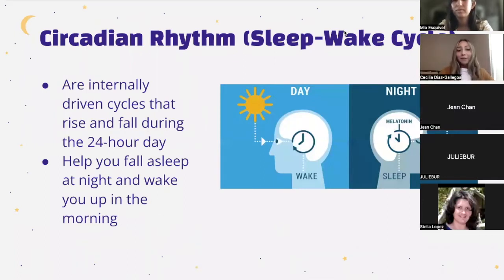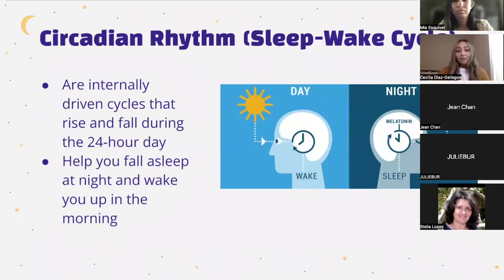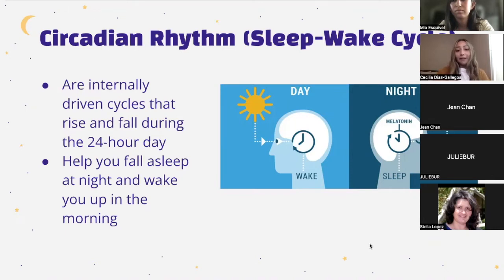Circadian rhythms are 24-hour cycles that are part of our body's internal clock, helping carry out essential functions. One aspect helps control your daily schedule for sleep and wakefulness. Circadian rhythms are influenced by light and dark as well as other factors. The brain receives signals from your environment and then activates certain hormones, alters your body temperature, and regulates your metabolism to either keep you awake and alert or draw you toward a sleepier state. When properly aligned, circadian rhythms promote consistent and restorative sleep, but when thrown off they can create sleeping problems.